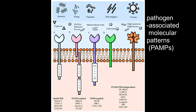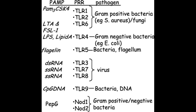Different microbes express different structures including nucleic acids that are unique to microbes, such as double-stranded RNA found in replicating viruses and unmethylated CpG DNA sequences found in bacteria; features of proteins found in microbes, such as initiation by N-formyl methionine, which is typical of bacterial proteins; and complex lipids and carbohydrates synthesized by microbes but not by mammalian cells, such as lipopolysaccharide (LPS) in gram-negative bacteria, lipoteichoic acid in gram-positive bacteria, and oligosaccharides with terminal mannose residues.